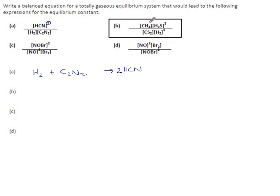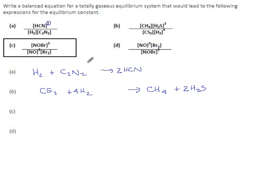For the second example, our products are methane and hydrogen sulfide. The power of 2 on H2S means it has a coefficient of 2. For reactants we have carbon disulfide with coefficient of 1 and hydrogen with a coefficient of 4. For the third, the product is nitrosyl bromide (NOBr) with power of 2, so we get a coefficient of 2. We have nitrogen monoxide with power of 2 (coefficient of 2) and bromine with power of 1.